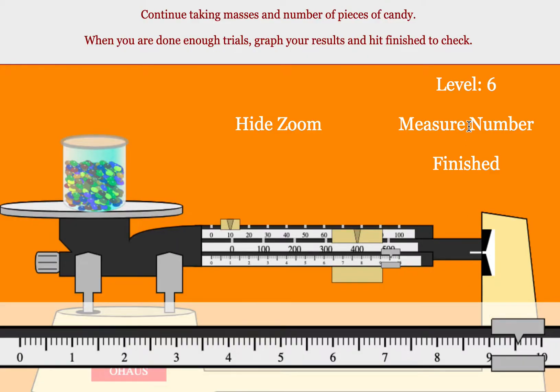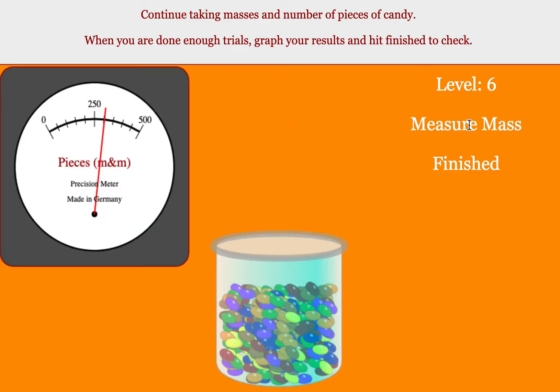To see how many pieces of candy are in that container, change it to measure number. And it looks like we are just a little beyond 300, so maybe 301, 305.